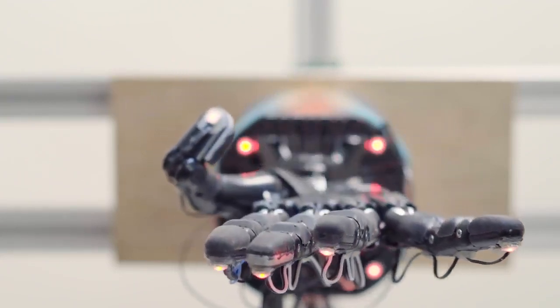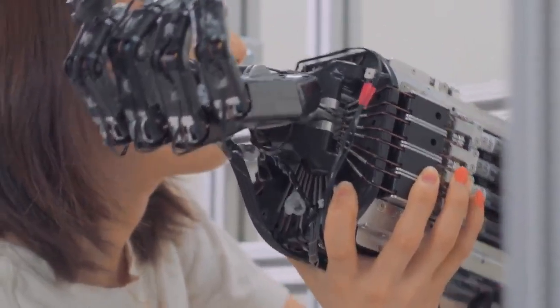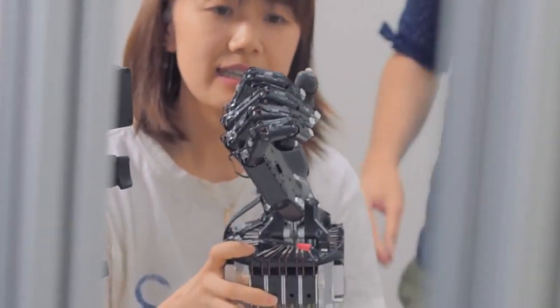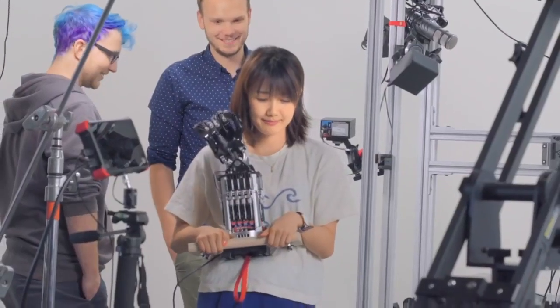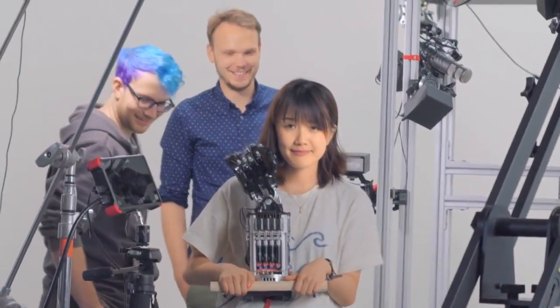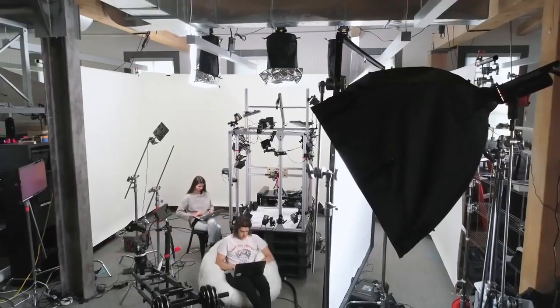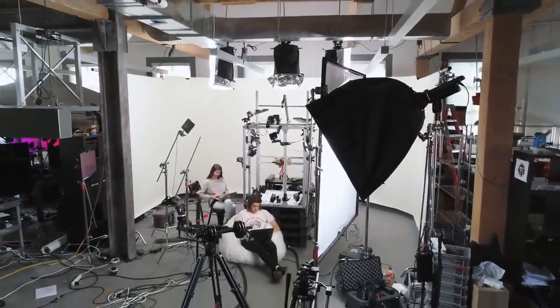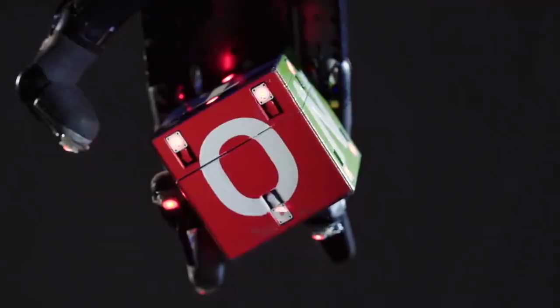Reorienting an object in the hand requires many problems to be solved. Dactyl learns to solve the object reorientation task entirely in simulation, without any human input. After this training phase, the learned policy works on the real robot without any fine-tuning. Learning methods for robotic manipulation face a dilemma.